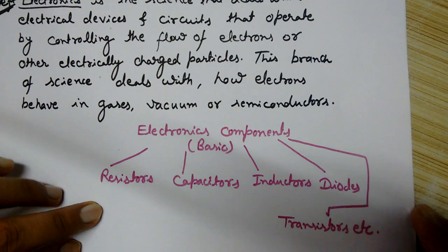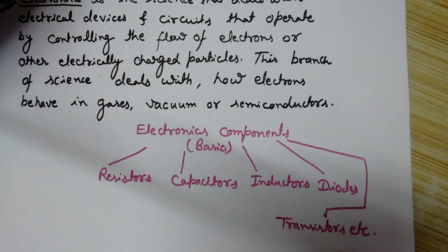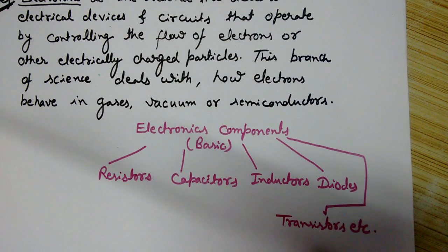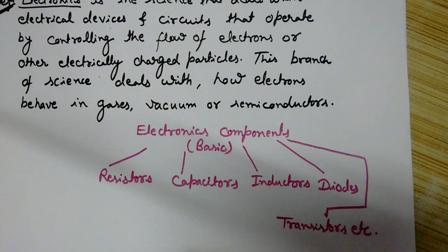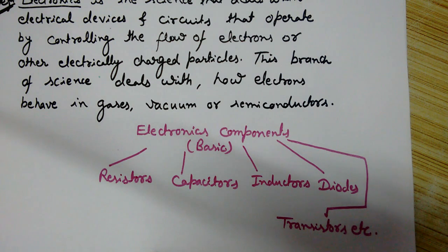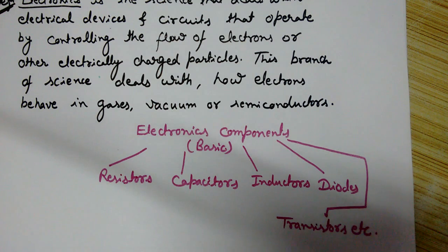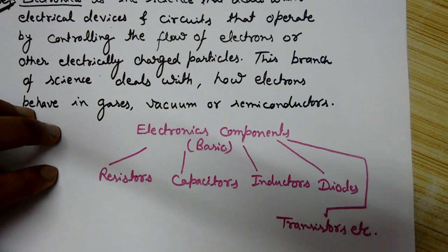This is not the complete list and there are so many other components too. These are only the basic components that are used very frequently. Using these basic components, it's possible to create more useful and complex things, like amplifiers, oscillators, transformers, relays, motors, generators, and so on.